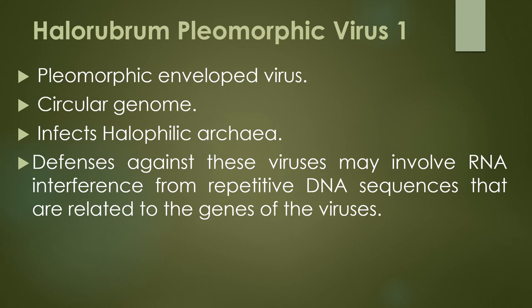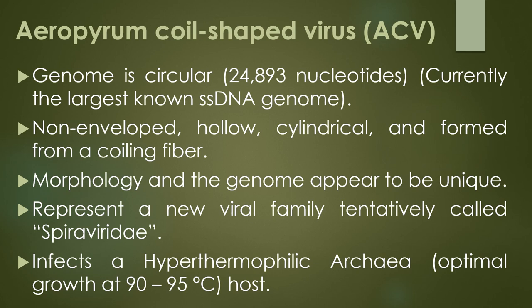The second single-stranded DNA virus infecting archaea is Aeropyrum coil-shaped virus, abbreviated as ACV. The genome of ACV is circular with 24,893 nucleotides and is currently the largest known single-stranded DNA genome. The virus is non-enveloped, hollow, cylindrical, and forms a coiling fiber. The morphology and genome of ACV appear to be unique, and ACV has been suggested to represent a new viral family tentatively called Spiraviridae. ACV infects hyperthermophilic archaea, which can grow optimally at 90 to 95 degrees Celsius.